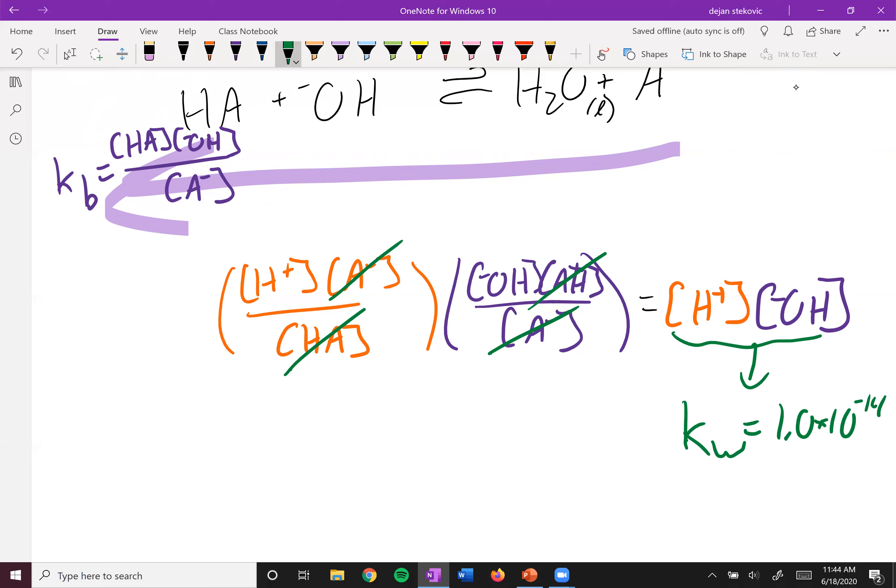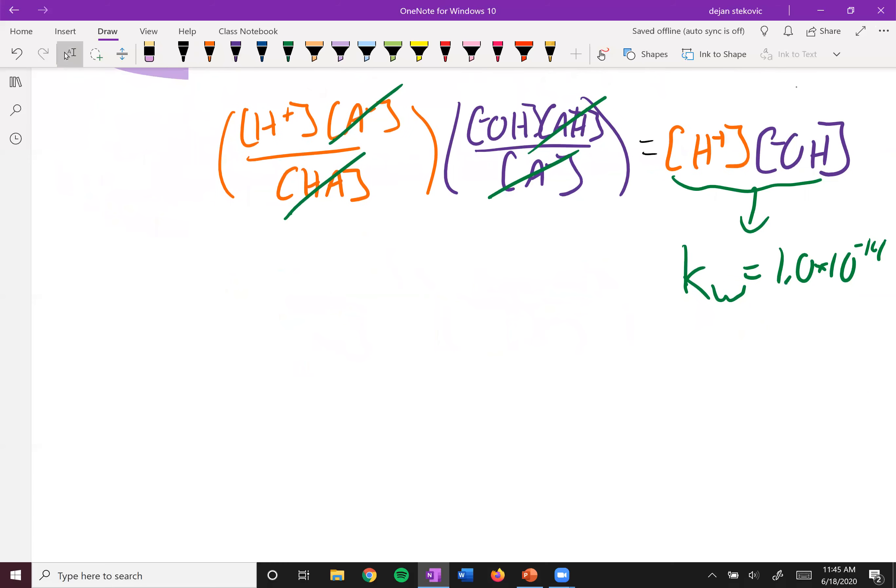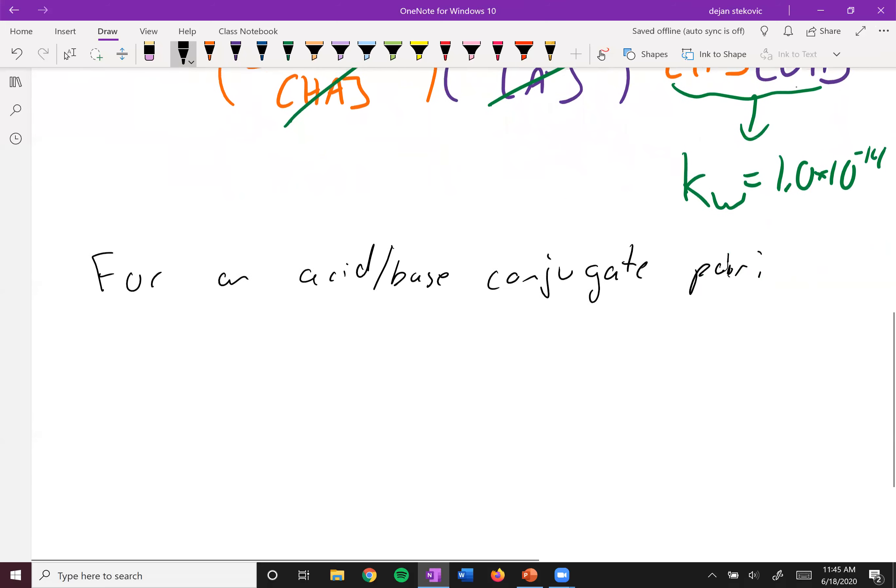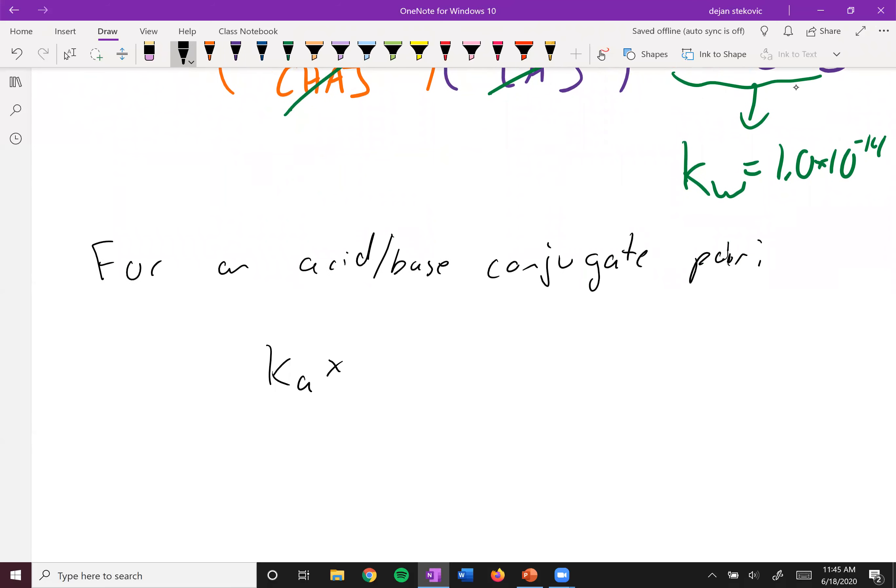The reason this is important is because if you have a KA or a KB, you can figure out the opposite for the conjugate pair. So for an acid base conjugate pair, KA times KB is going to be equal to KW, which is equal to 1.0 times 10 to the negative 14.